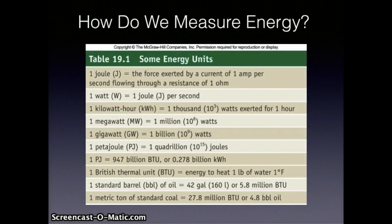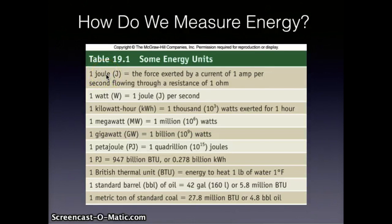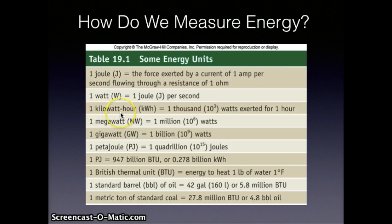To understand the magnitude of energy use, it is helpful to know the units used to measure it. Work is the application of force over distance, measured in joules. Energy is the capacity to do work. Power is the rate of energy flow — for example, one watt equals one joule per second. If you use a 100-watt light bulb for 10 hours, you have used 1,000 watt-hours or one kilowatt hour. Most American households use about 11,000 kilowatt hours per year.